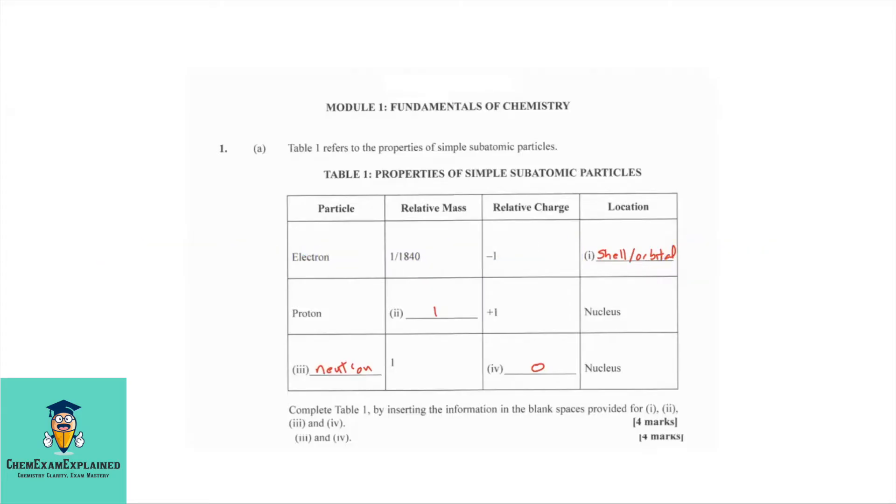In looking at Question 1, Part A, you are given a table. Table 1 refers to the properties of simple subatomic particles. You are to complete Table 1 by inserting the information in the blank spaces provided for 1, 2, 3, and 4. If you look in the table, you'll see the blank spaces.